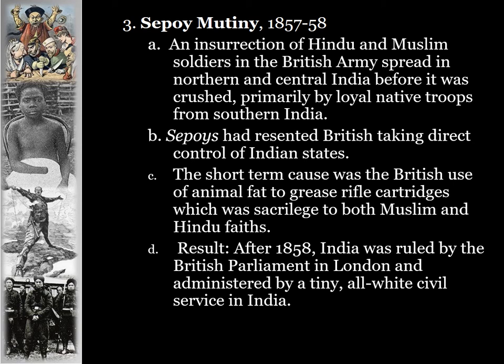After the Sepoy Mutiny was put down, after 1858, India was ruled directly by the British Parliament in London rather than indirectly, and administered by a tiny all-white civil service in India. Instead of the British East India Company having control, the British government took control outright, and instead of any kind of self-government, an all-white civil service was sent to India to maintain control over the colony.